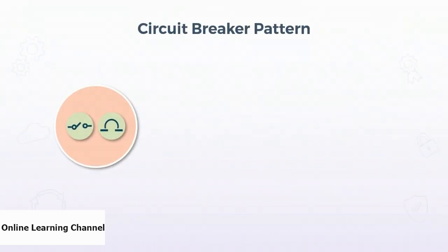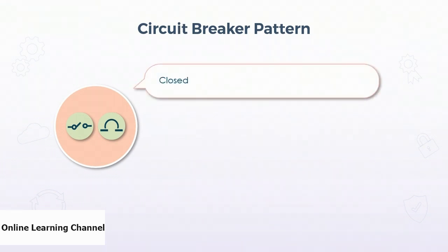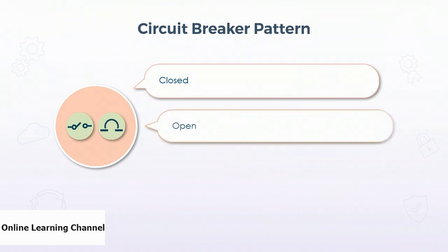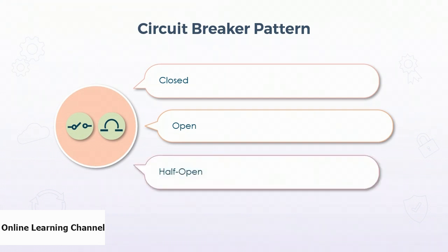The circuit breaker pattern is a design pattern used to prevent applications from continuously repeating operations that are failing, and provides a mechanism for automatic detection of resolution and resuming operations. When the application is in a closed state, the request is routed normally. The system has a proxy function that maintains records of recent failures. If a failure threshold is exceeded, the application moves the proxy to an open state, which initiates a timer. When the proxy is in an open state, requests will fail and the proxy returns an exception to the application. After the timer expires, the proxy can assume a half-open state, restricting the number of requests that can be passed to the service to protect it from being overwhelmed and triggering another failure.